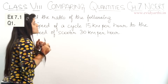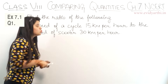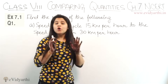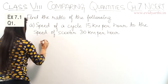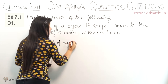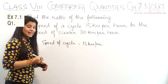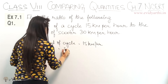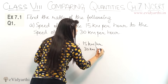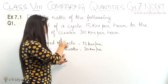The first part: the speed of a cycle is 15 km per hour to the speed of a scooter 30 km per hour. We have to find the ratio of the cycle's speed to that of the scooter. Speed of cycle is 15 km per hour and speed of scooter is 30 km per hour.